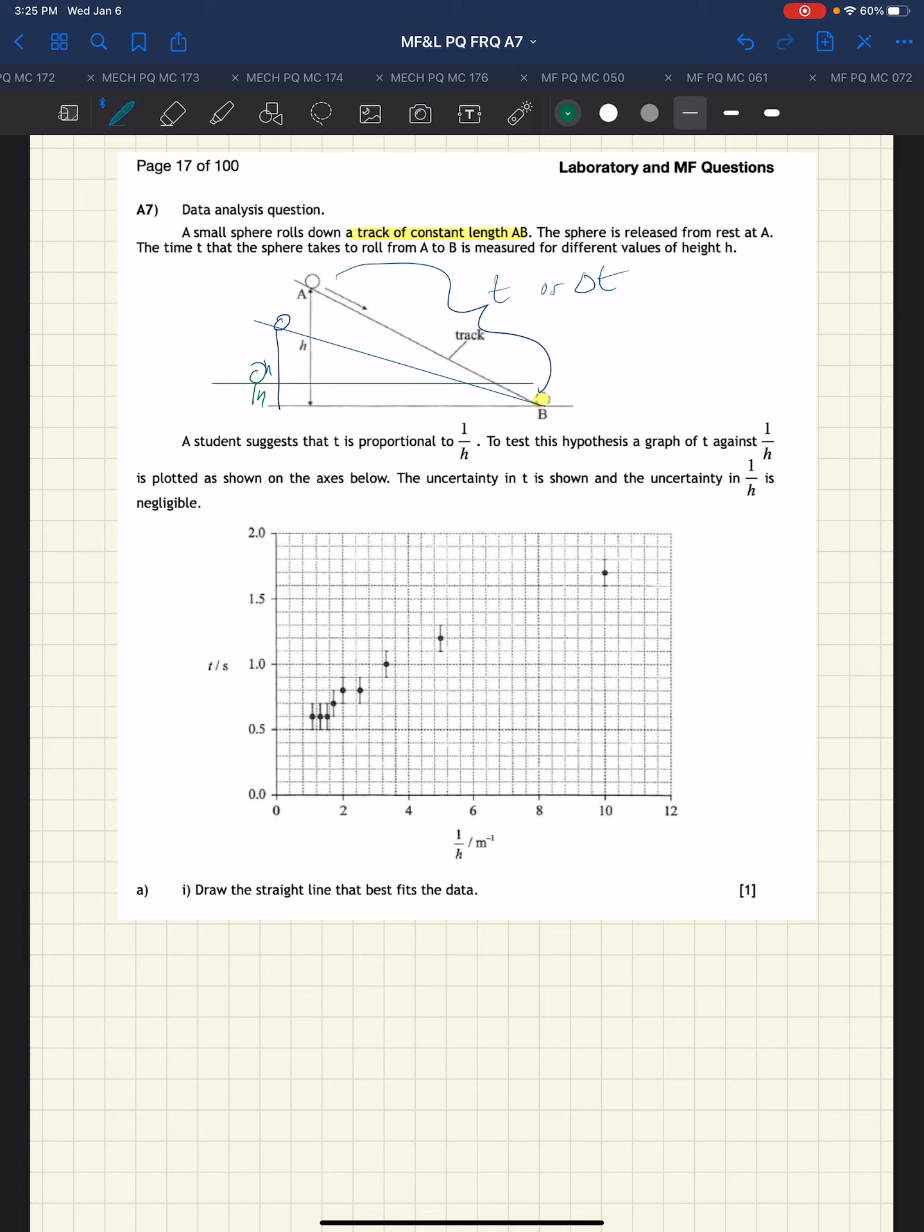Student suggests that T is proportional to 1 over H. So what does that mean, T being proportional to 1 over H? If T is proportional to 1 over H, then T is equal to the proportionality constant times 1 over H.